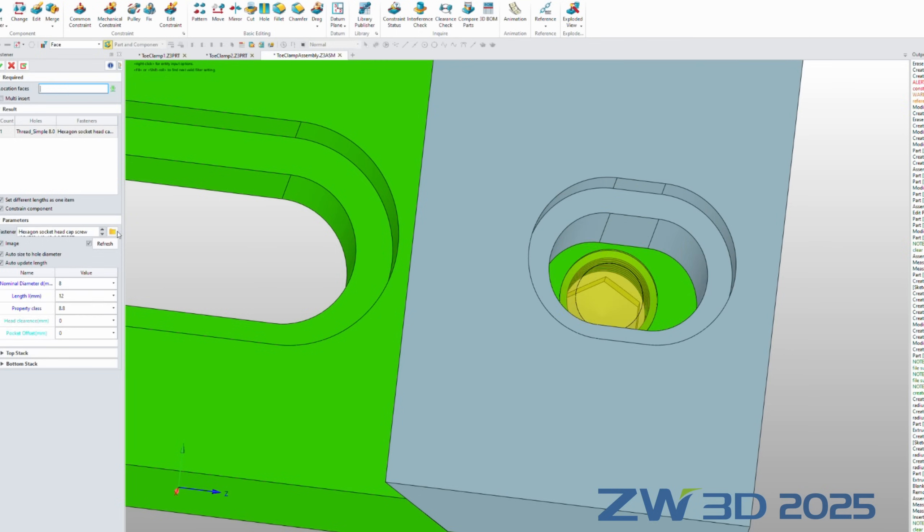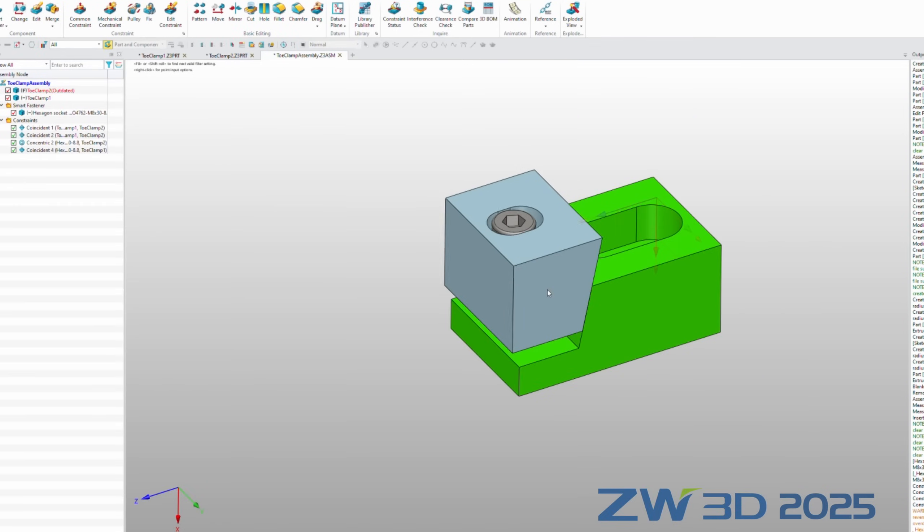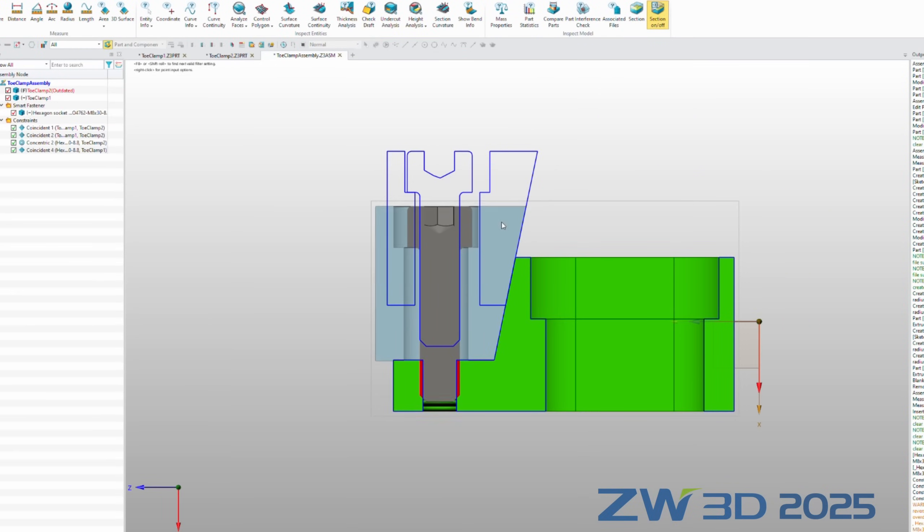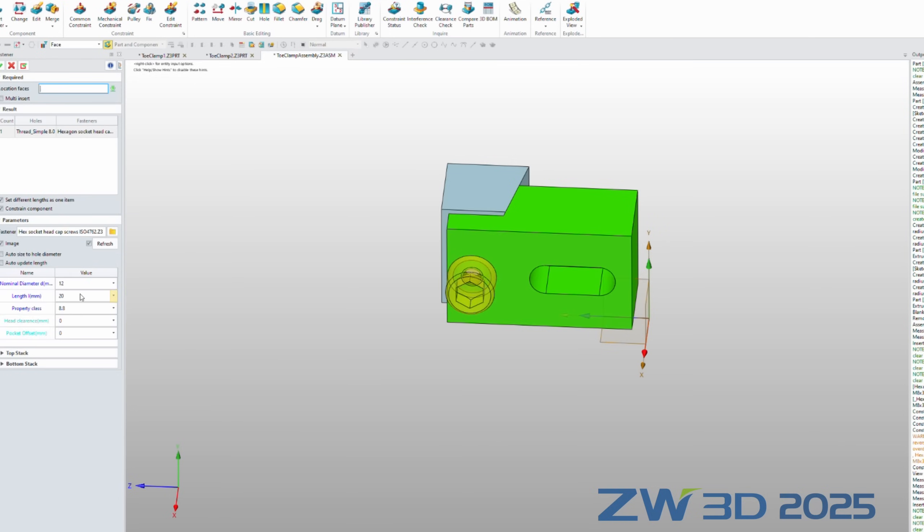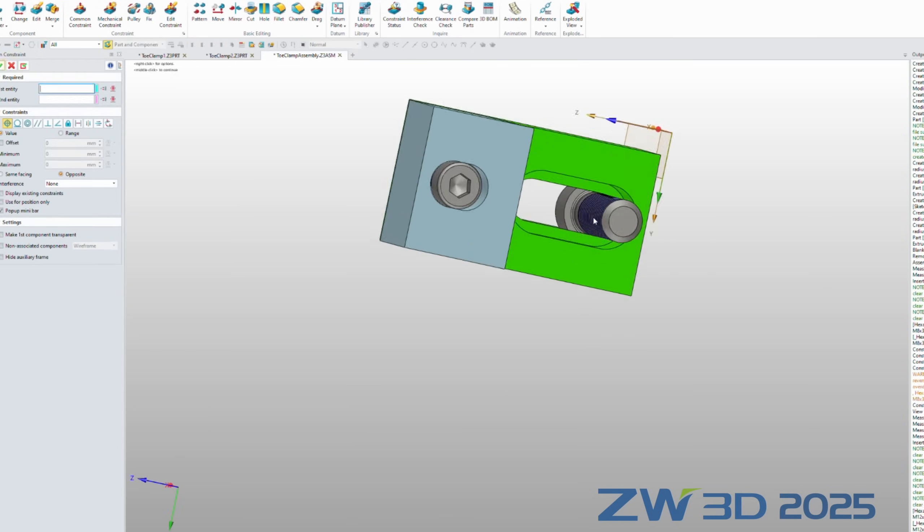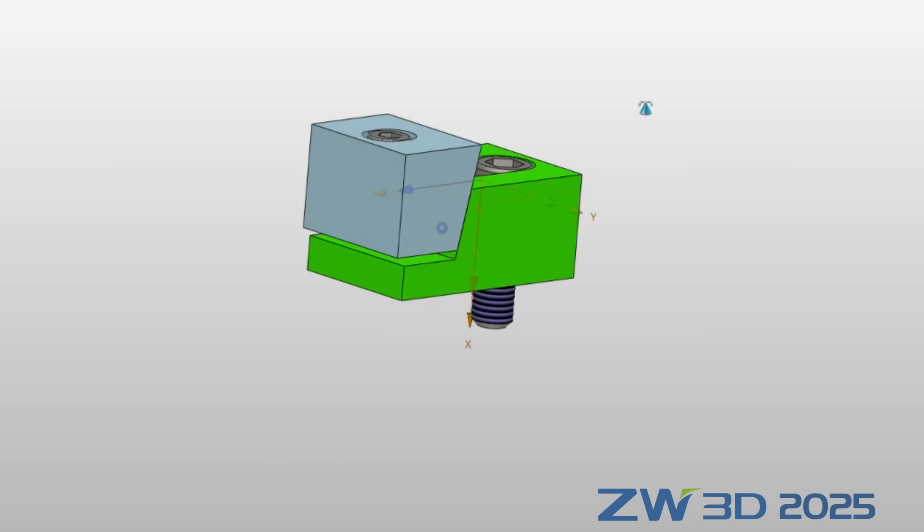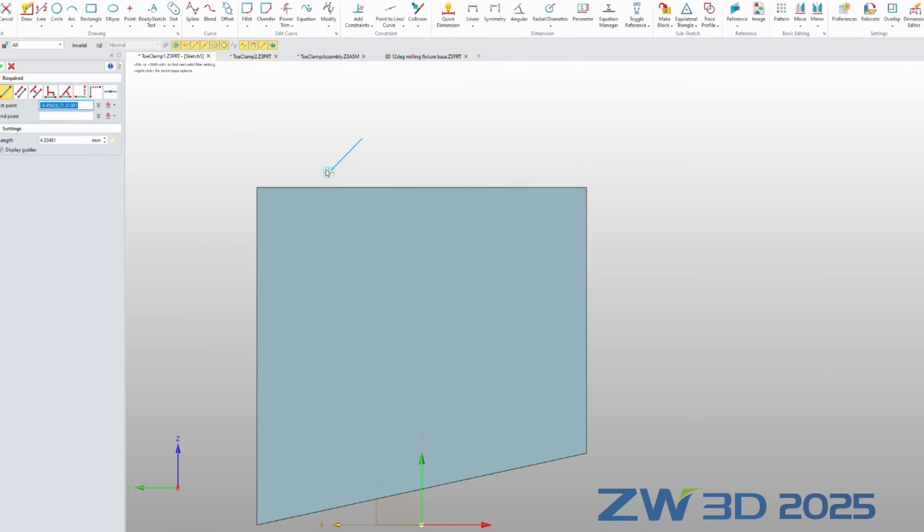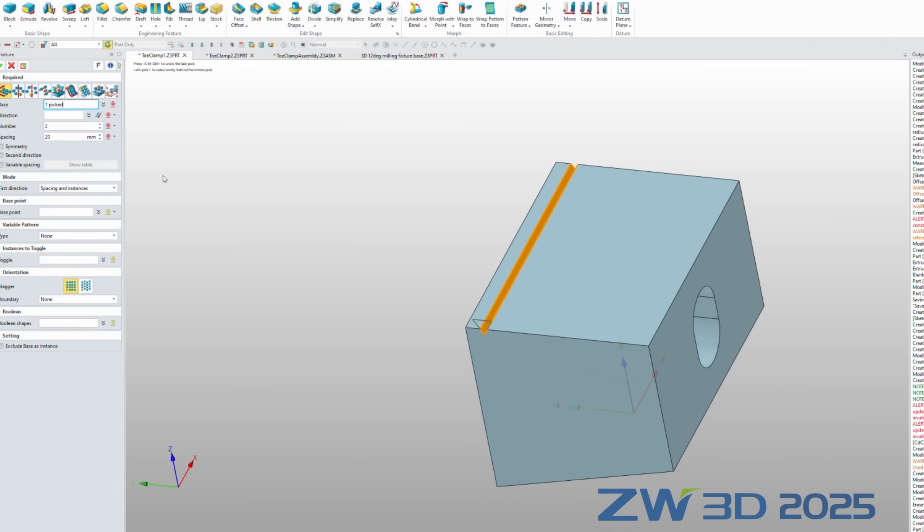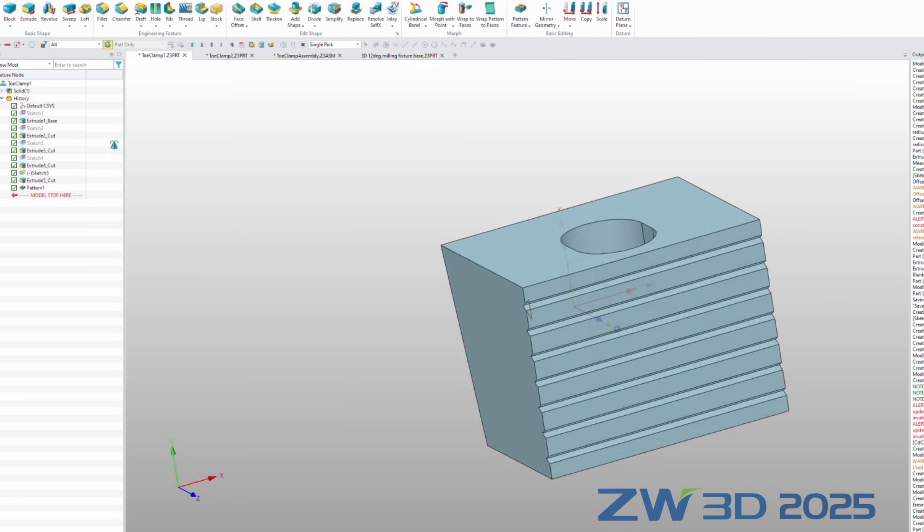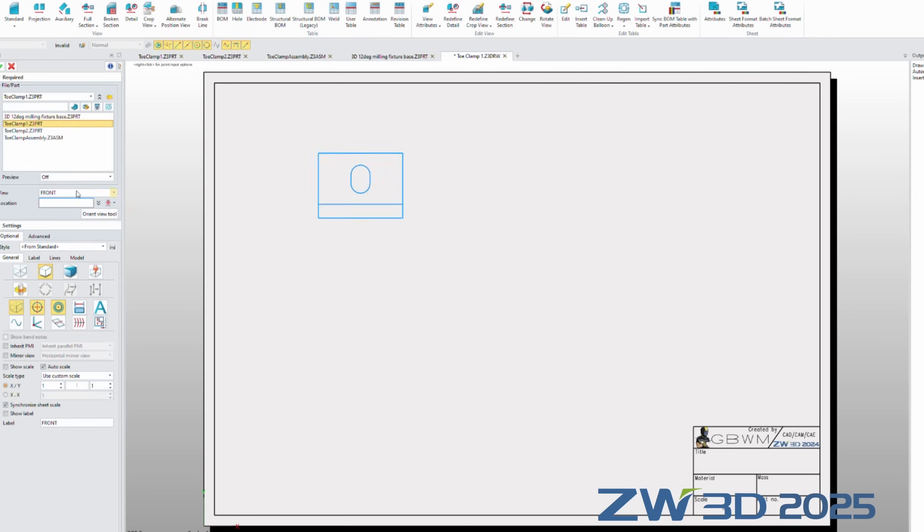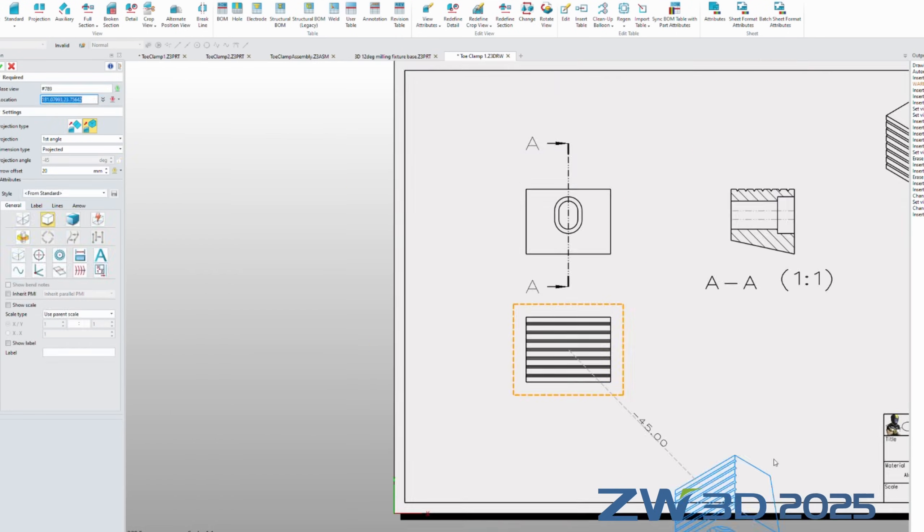This software has its own library of fasteners like screws. I added some V-shaped grooves to improve the gripping ability of the jaw. And then made a drawing out of it.